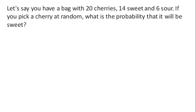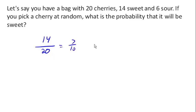Let's continue talking about basic probabilities. Suppose you have a bag with 20 cherries, 14 of which are sweet and 6 sour. If you pick a cherry at random, what's the probability it will be sweet? How many ways can our event occur out of all the outcomes? There are 14 ways to end up with a sweet cherry out of 20 possible cherries. So there's a 14 out of 20, or 7 out of 10, or 70% probability that our cherry will be sweet.